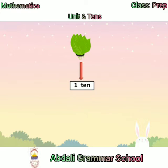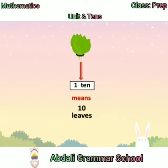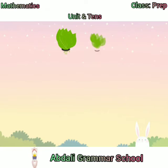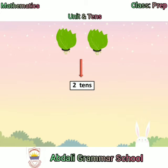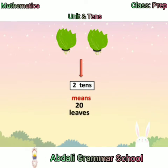One ten means ten leaves. Now there are two groups of tens, which means twenty leaves.